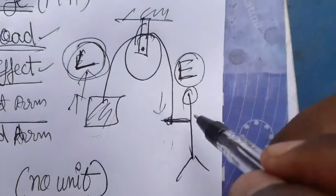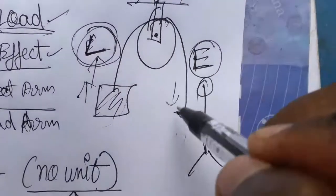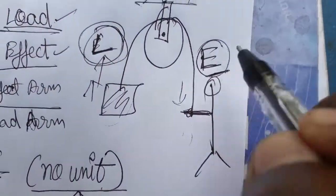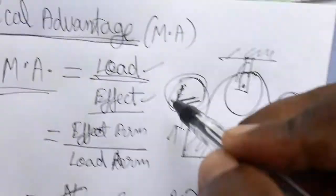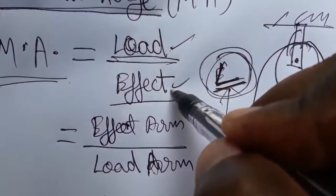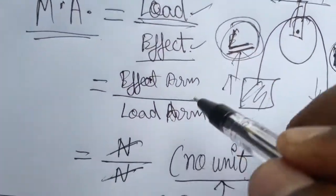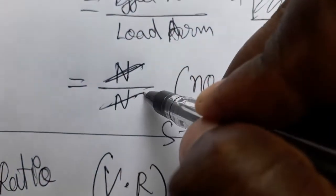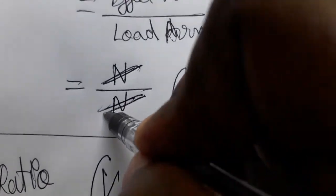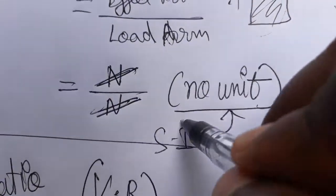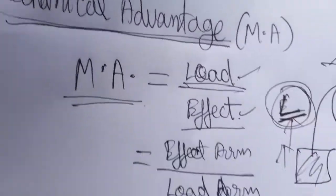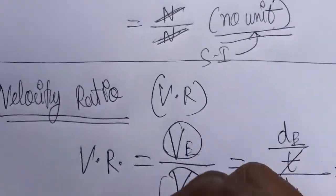Here is a fixed pulley — this person is pulling the pulley, meaning he is applying the effort, and the load is going to lift. Mechanical advantage is load by effort. The SI unit of load is newton, SI unit of effort is newton; newtons get cancelled, so there is no unit for mechanical advantage.